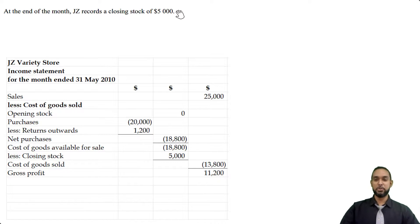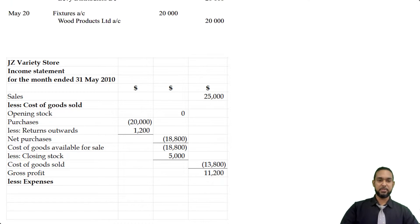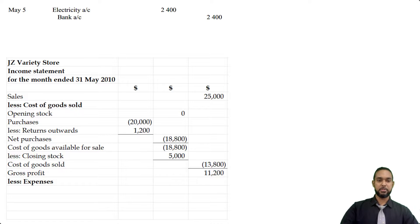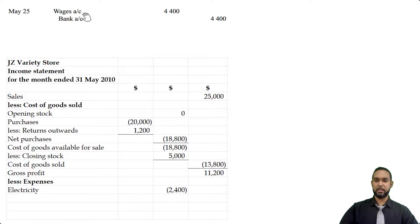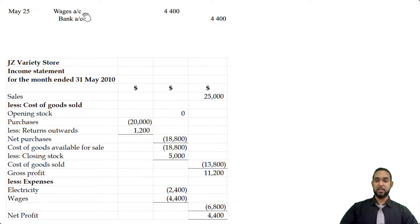Now for less expenses: we had electricity and wages. Electricity was $2,400 and wages were $4,400, totaling $6,800 in expenses. Subtracting $6,800 from the gross profit of $11,200 gives a net profit of $4,400. That's the end of the income statement.